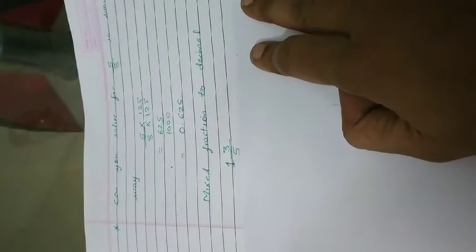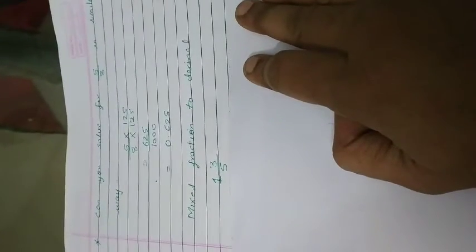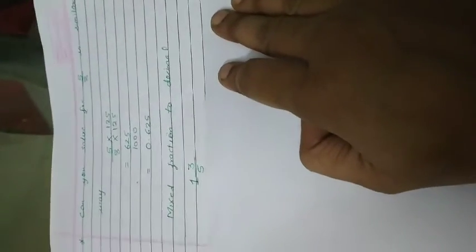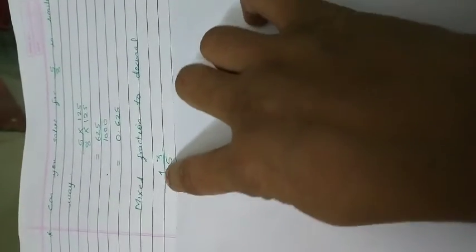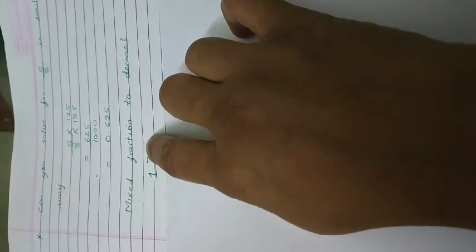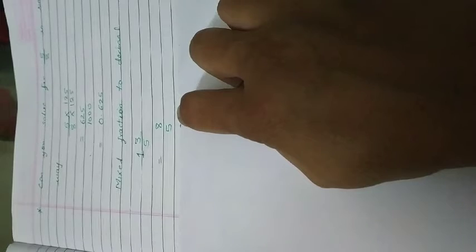Let's see some more sums or let's convert first mixed fraction to the decimals. The example 1 and 3 upon 5. Let's convert this into improper fraction first. How it will be? 5, 1 times 5 plus 3. That is 8. So, 8 upon 5. So, we get an improper fraction. That is 8 upon 5.